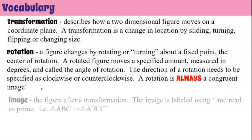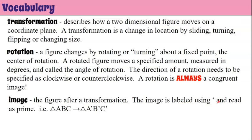So what is an image? The image is the figure after the transformation, and we're going to label this image using apostrophes which in math is read as prime. So for example, triangle ABC is transformed to triangle A prime, B prime, C prime.